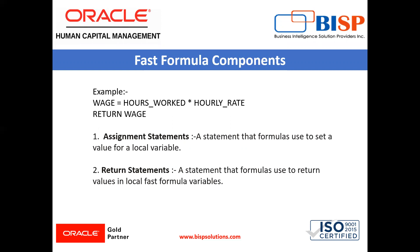Let's look at an example to understand how each component is used in a Fast Formula. Suppose you want to calculate the pay value for the wages element by multiplying the number of hours an employee works each week by the hourly rate. So this is how you write the formula: wages equals hours worked multiplied by hourly rate, and it returns your wage amount — this is the assignment statement.